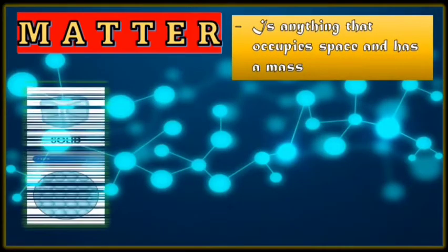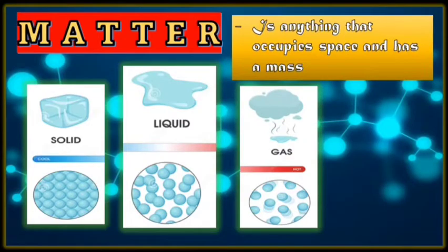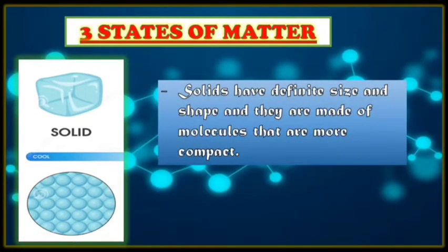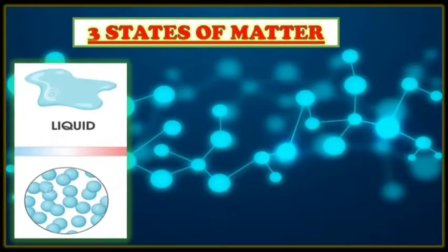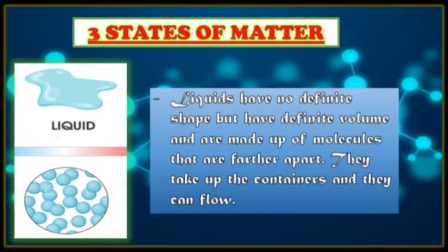Other types of materials have properties also that make them harmful. As I said, matter has three states. These are the solid, liquid, and gas. Solids have definite size and shape and they are made up of molecules that are more compact. Just like spoon, glass, sugar, cake, and shirt are examples of solid objects. Liquids have no definite shape but have definite volume and are made up of molecules that are farther apart. They take up the shape of the containers and they can flow. For example, water, juice, alcohol, and vinegar are examples of liquid matter.